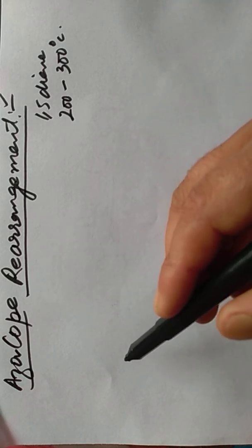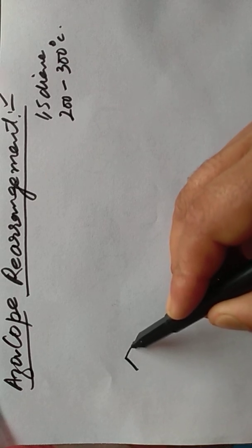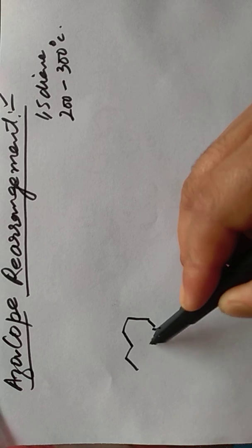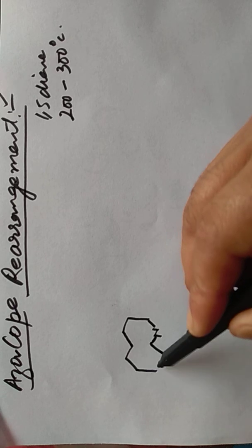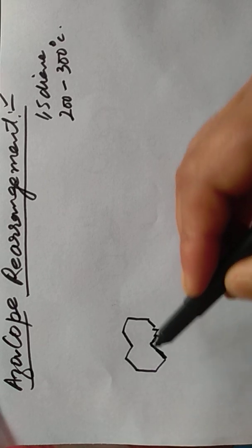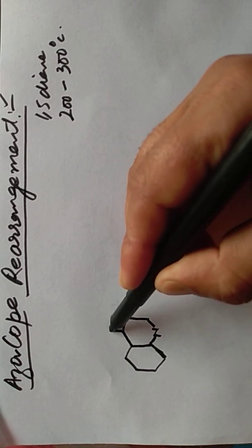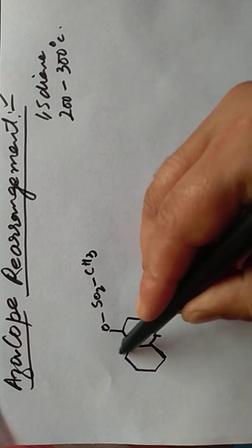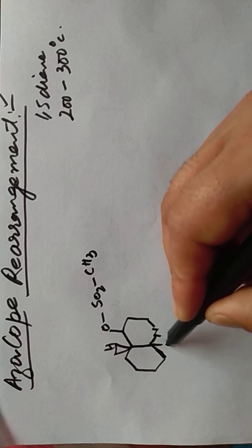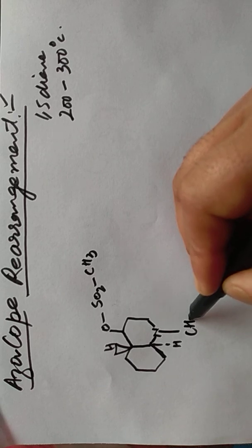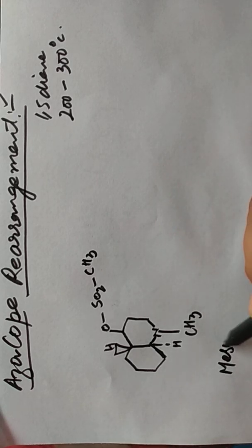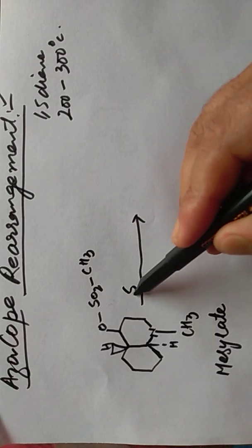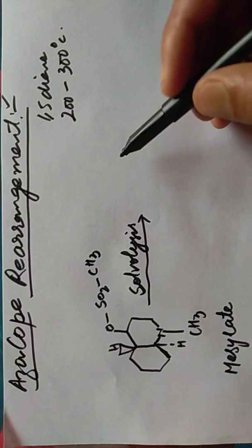an example of aza-cope rearrangement. This is mescaline. When mescaline undergoes solvolysis, it forms an intermediate